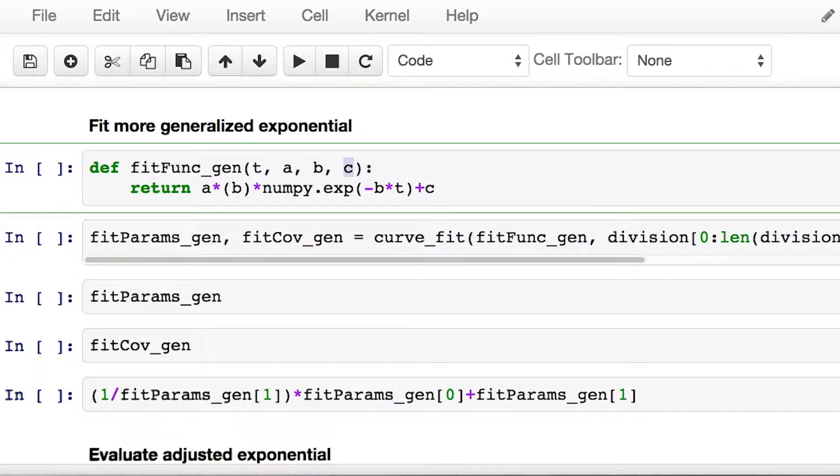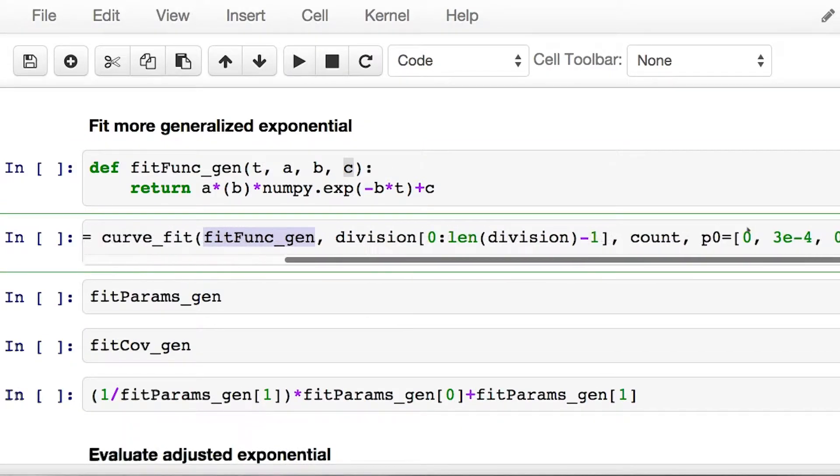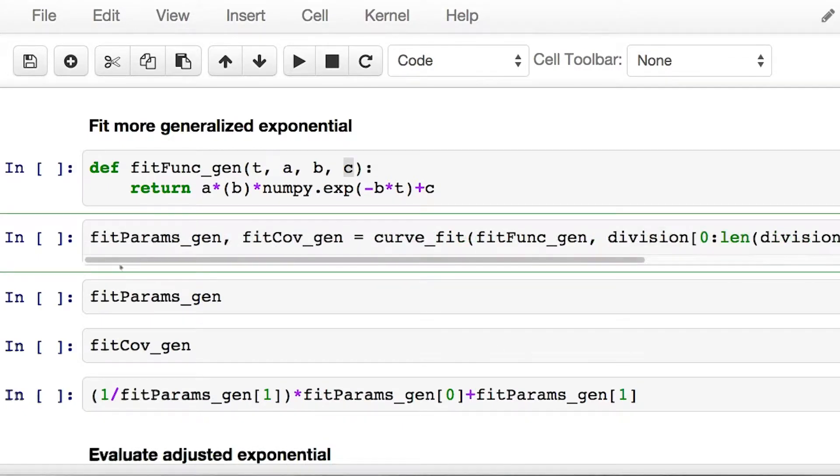We're saying to curve fit, we've got this callable function with independent value t and a bunch of parameters. We're going to feed it these values that I want you to fit to. Given that, find me the parameters which best fits those values and give me the covariance matrix which describes how certain we are about those values. Let's go ahead and do that.